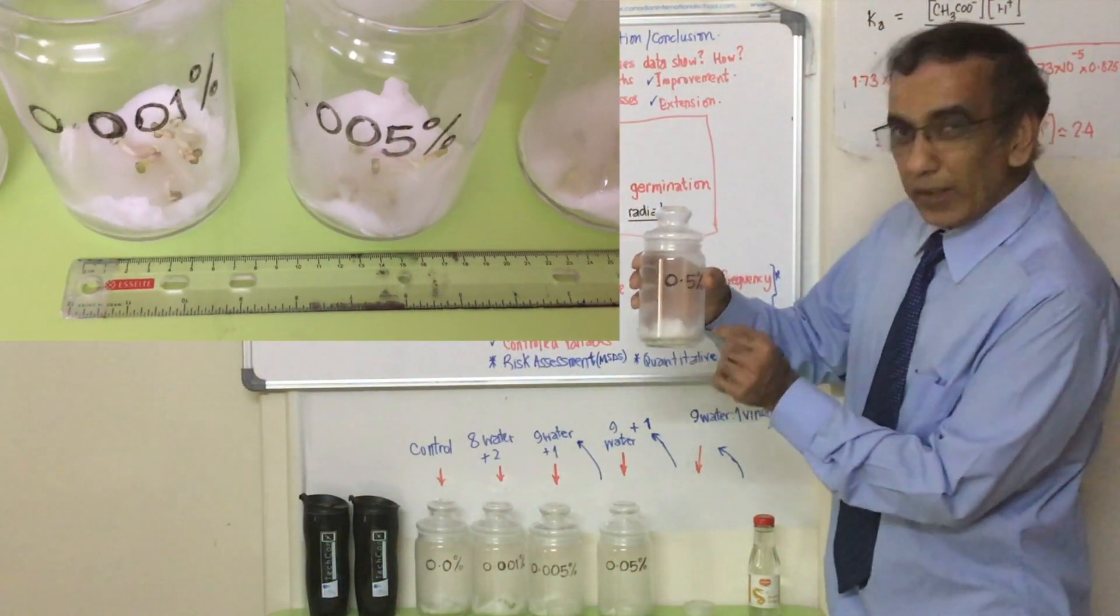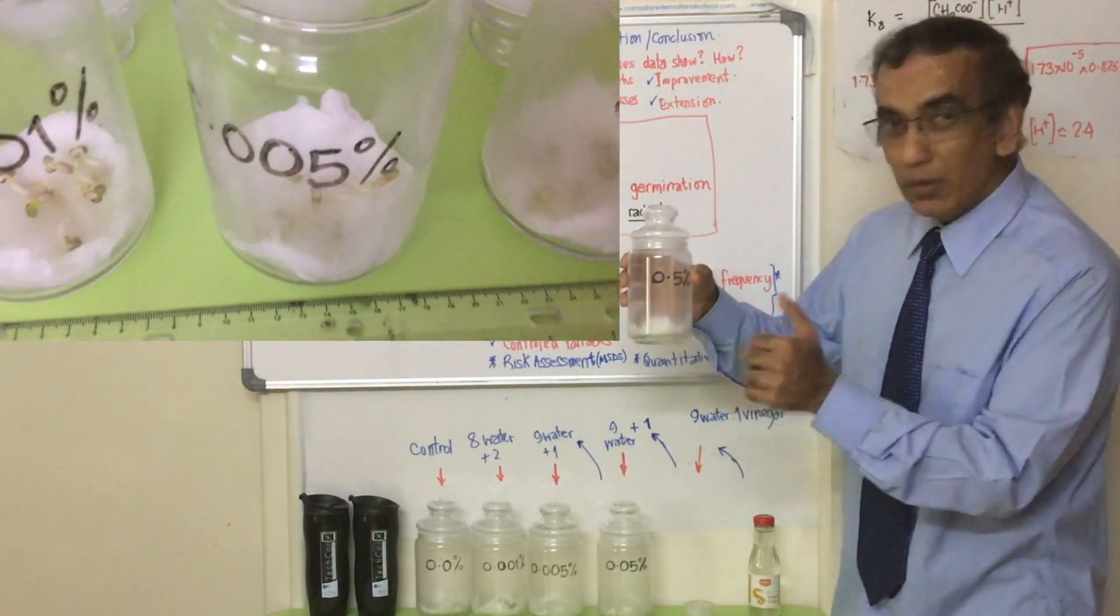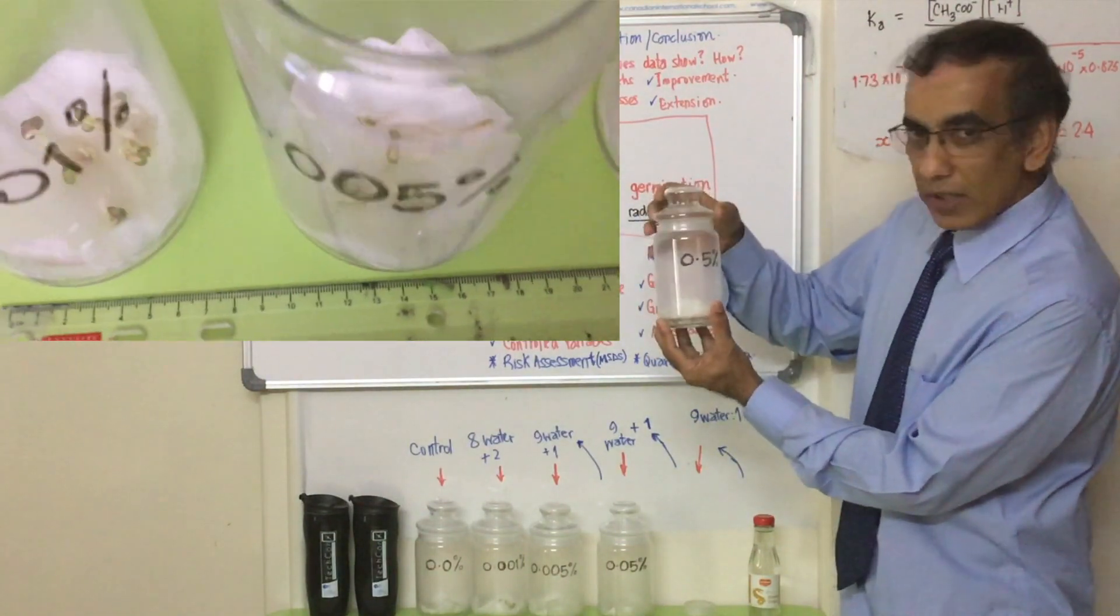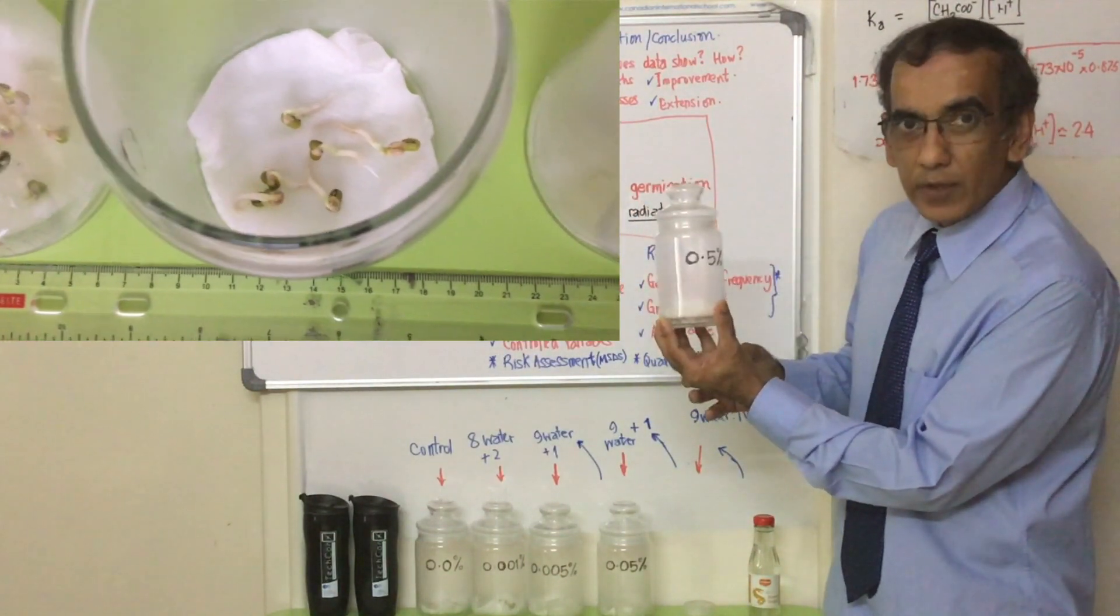And you might wonder how these seeds are going to get oxygen when the container is sealed. Well, considering how small the seeds are and you only have six of them, the oxygen supply in this container should be sufficient.